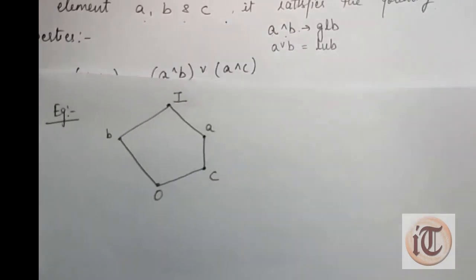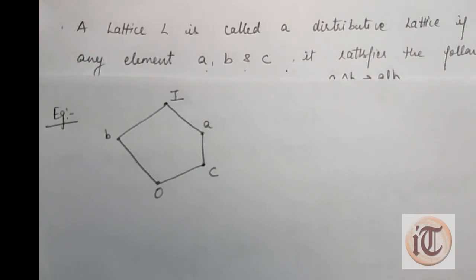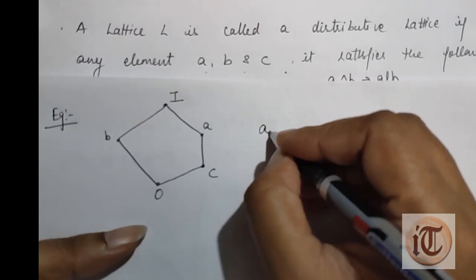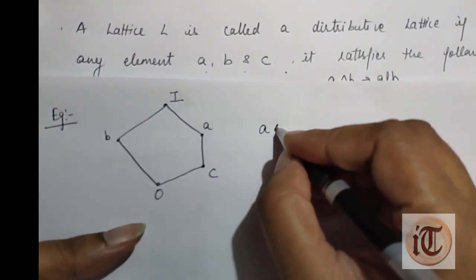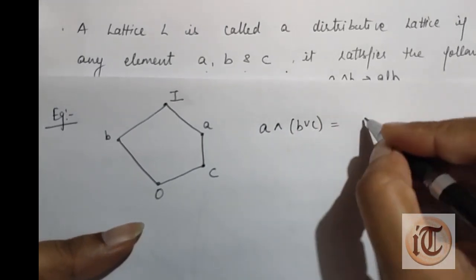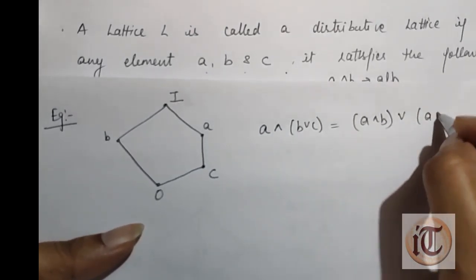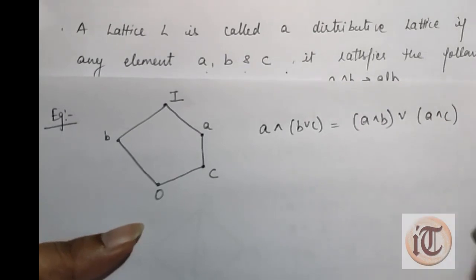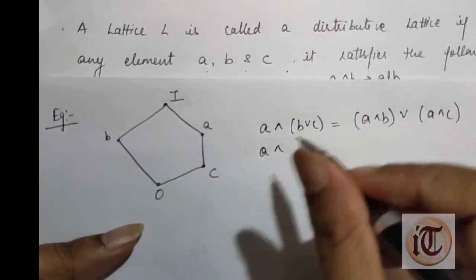The next example: here is another lattice and we determine whether this lattice is distributive or not. We write the condition: A ∧ (B ∨ C) = (A ∧ B) ∨ (A ∧ C), and first compute the left-hand side.